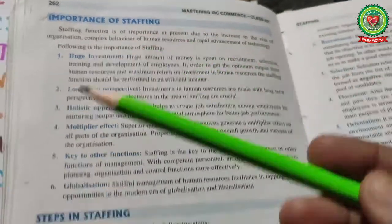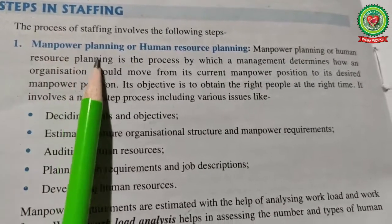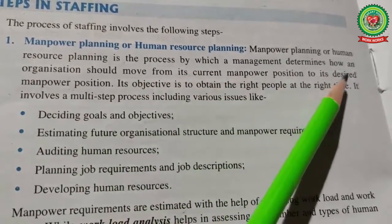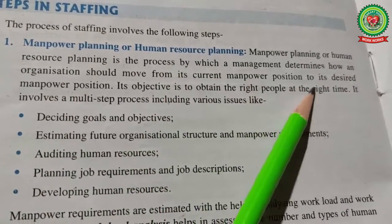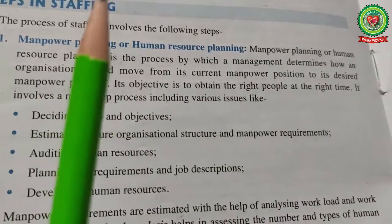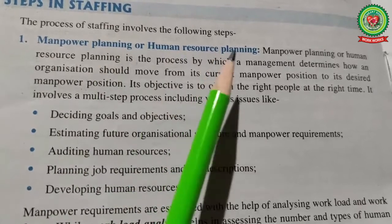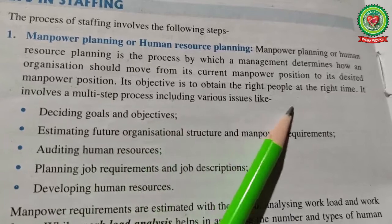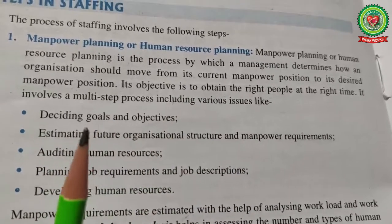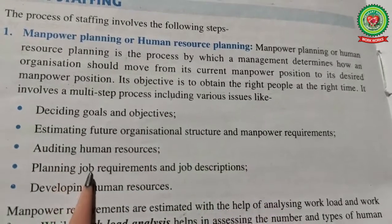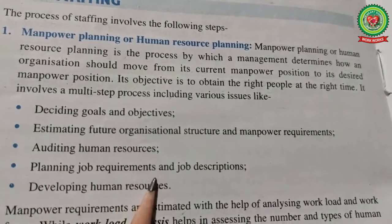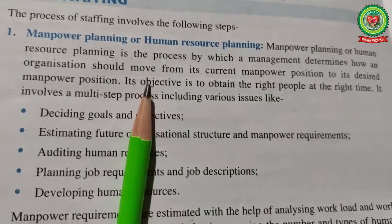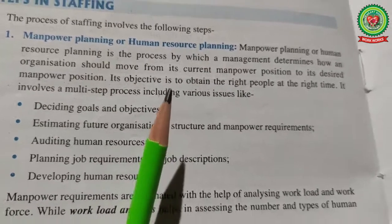Open your books at page number 262 — steps in staffing. Step one is manpower planning. When the company plans the manpower required in future, manpower planning or human resource planning is the process by which management determines how an organization should move from its current manpower position to its desired manpower position. Its main objective is to obtain the right people at the right place. It involves multiple steps including deciding goals and objectives, estimating future organizational structure and manpower requirements, auditing human resources, planning job requirements and job descriptions, and developing human resources.